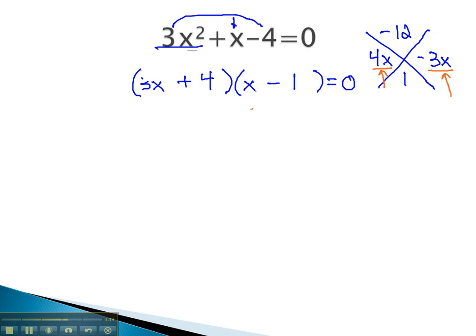Once it's factored, in order to find our solutions, one of the factors must be equal to 0. Either 3x plus 4 is 0, or the x minus 1 is 0.